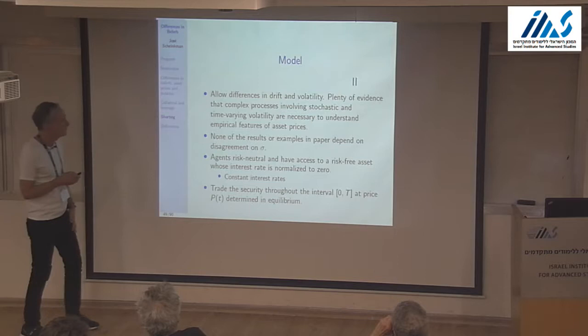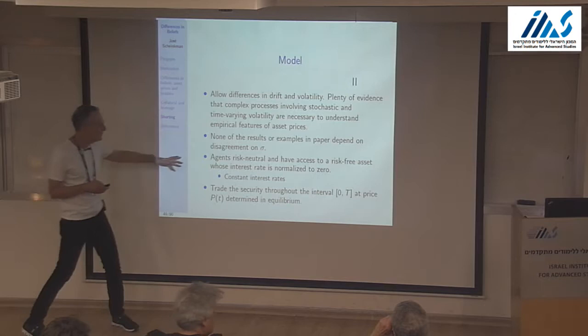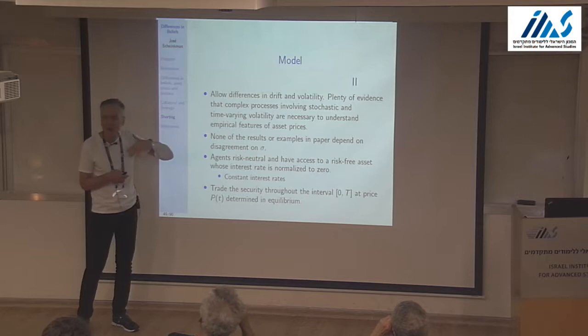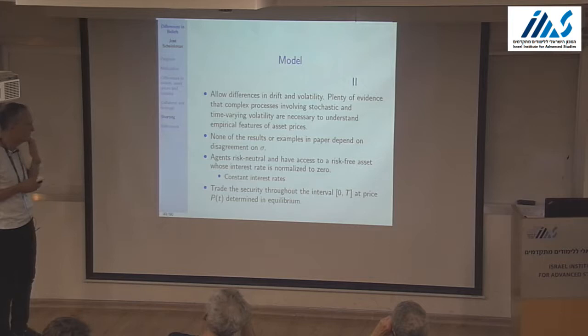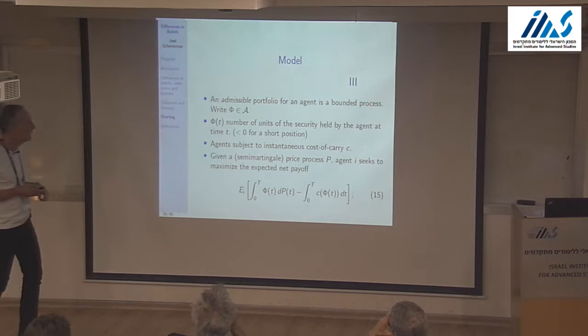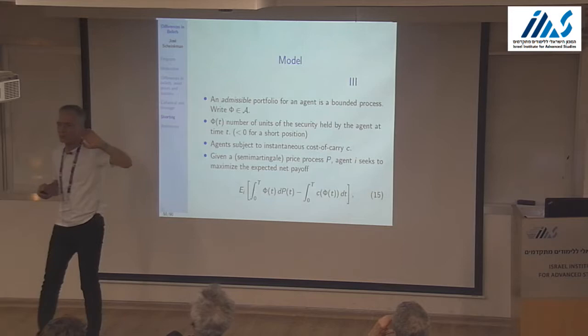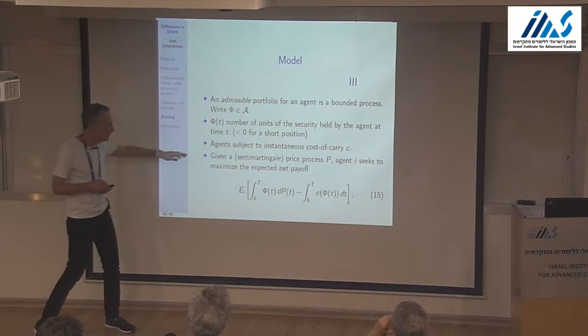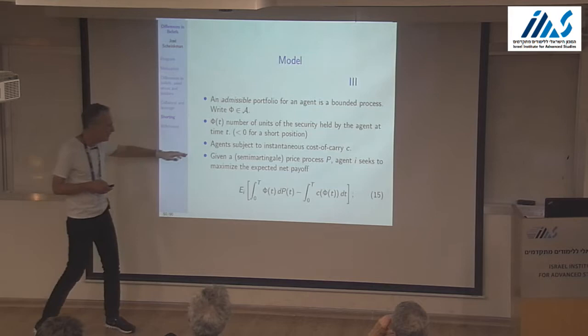I'll make standard smoothness assumptions and a non-degeneracy assumption on the volatility matrix σ. Agents are risk-neutral and have access to a risk-free asset with interest rate normalized to zero — just a normalization; a constant interest rate makes no difference. They trade the security over [0, T] at a price p(t) determined in equilibrium. An agent's portfolio φ(t) is the number of securities held; negative φ means a short position.